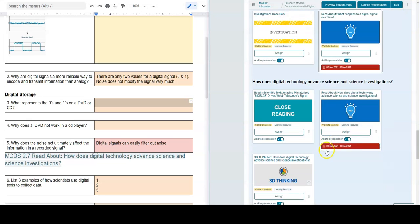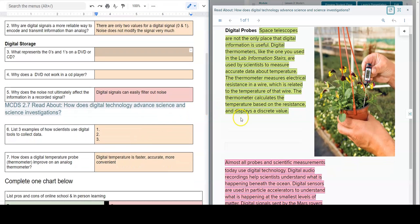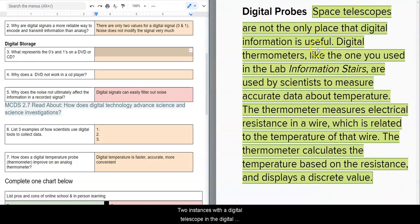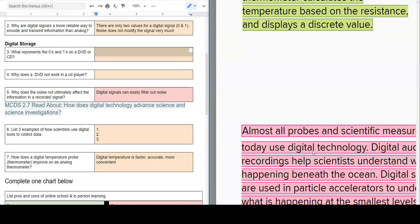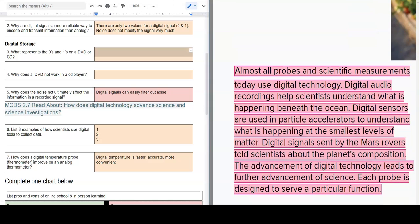So next, we move on to 2.7. And reading through 2.7, we have two instances with a digital telescope and the digital thermometer of how scientists use these tools to collect data. And then down here, we see a few other examples. We have digital sensors that are used in particle accelerators. We have digital signals that are sent by the Mars rovers. And then also digital recording equipment that records digital audio that can help in the ocean.